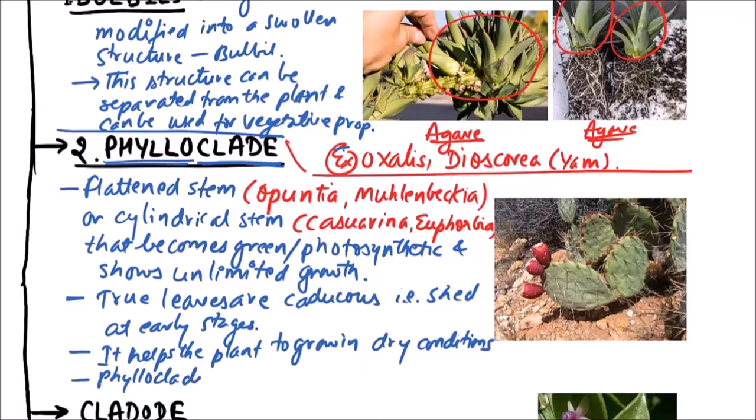Phylloclades may store water, mucilage and even latex. The examples are already discussed. Opuntia, Muehlenbeckia, Casuarina and Euphorbia.